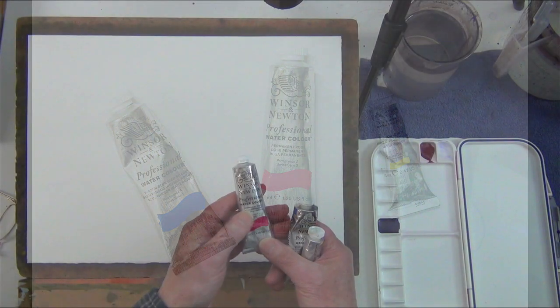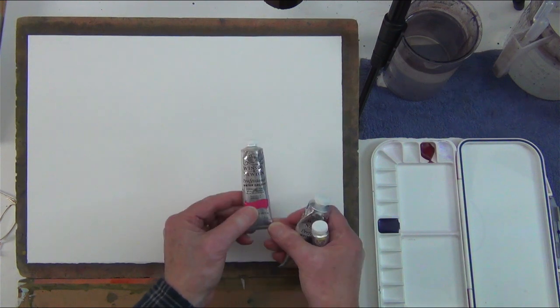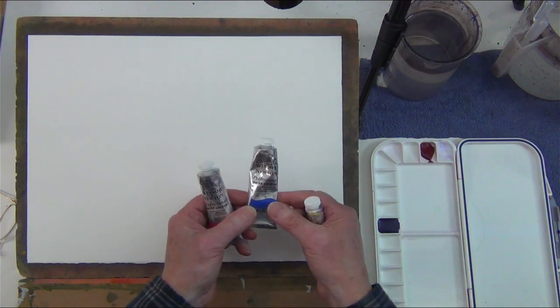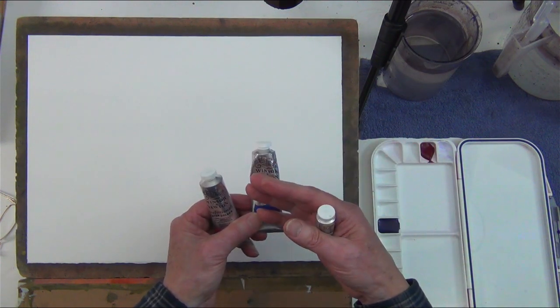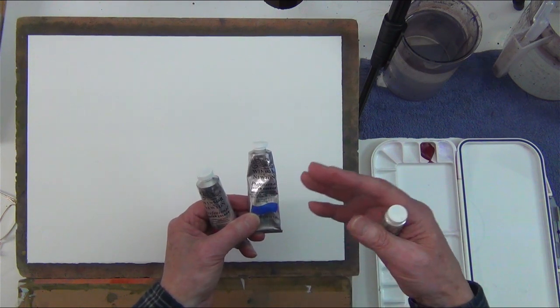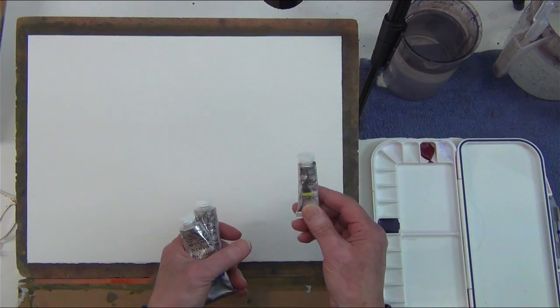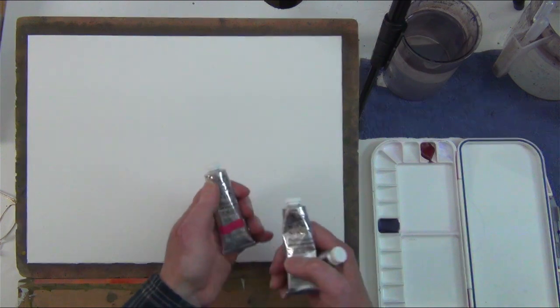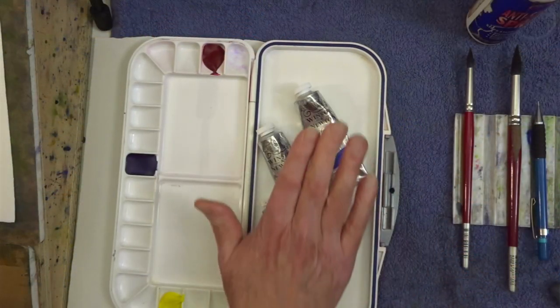So for this course, the colors we're going to use are Permanent Rose, Windsor Blue Red Shade - it's also called Green Shade, Windsor Blue Red Shade is the one you want. It's a blue, a very transparent blue that leans a little bit to the red. And Windsor Lemon, which is what we call a cool yellow. Permanent Rose is what we call a cool red. It's a red with just a tiny bit of blue in it. So there's the colors.